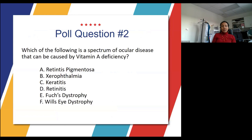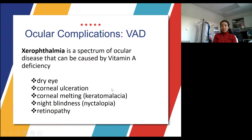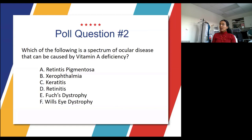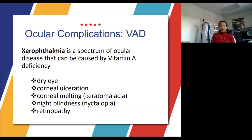The next polling question: which of the following is a spectrum of ocular diseases that can be caused by vitamin A deficiency? 71% of you said xerophthalmia, which is the correct answer. The ocular complications of vitamin A deficiency include dry eye, corneal ulceration, corneal melting or keratomalacia, night blindness called nyctalopia, and retinopathy. This spectrum of ocular diseases is called xerophthalmia.